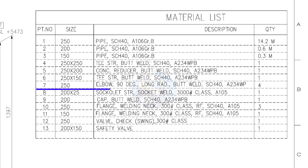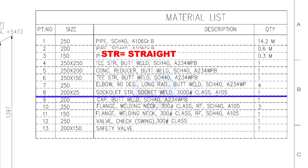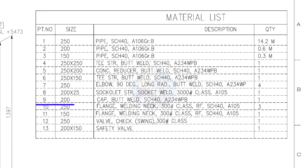Item number 7: 250 NB, 90 degree long radius elbow, butt welded type, Schedule 40. Quantity: 1. Item number 8: 200 into 25 Sokolet, socket welded, Class 3000. Quantity: 1.